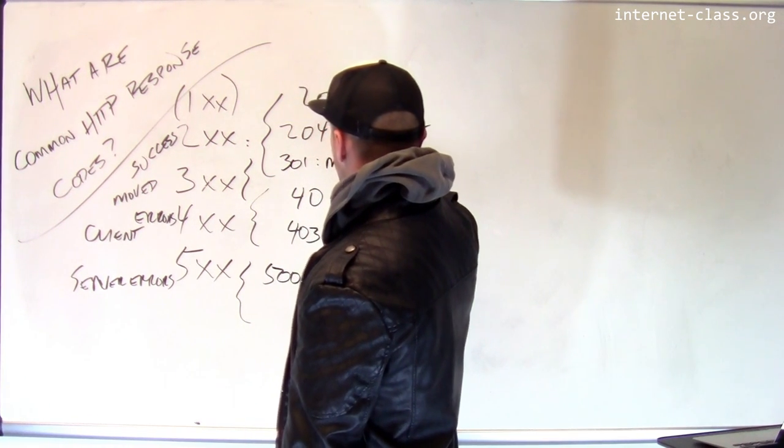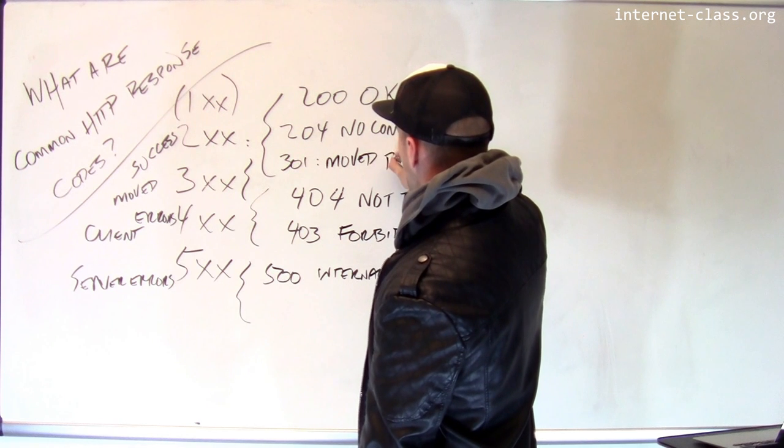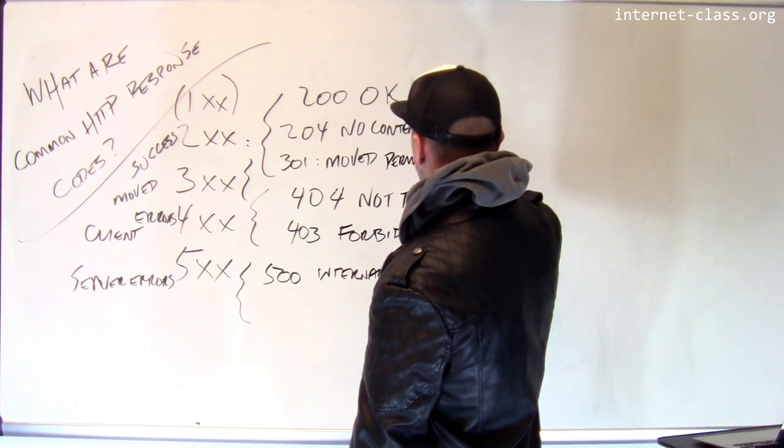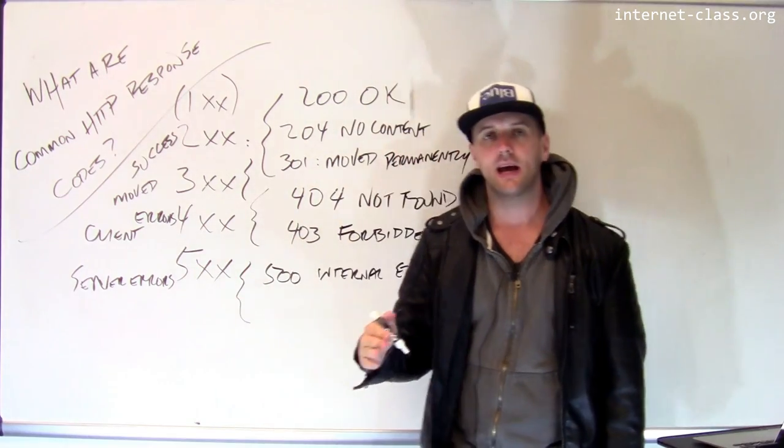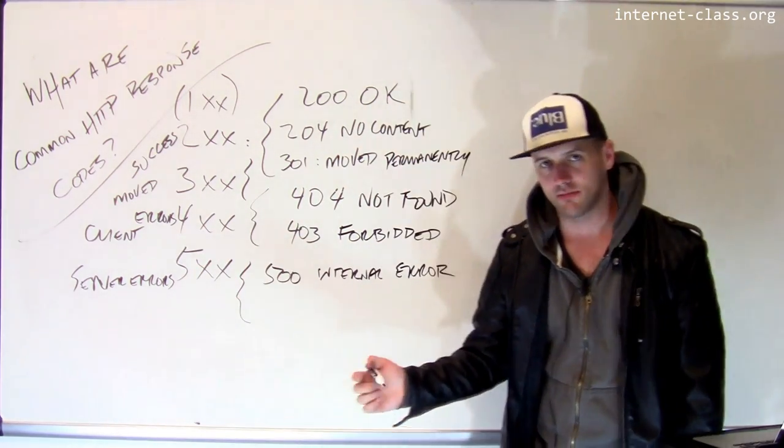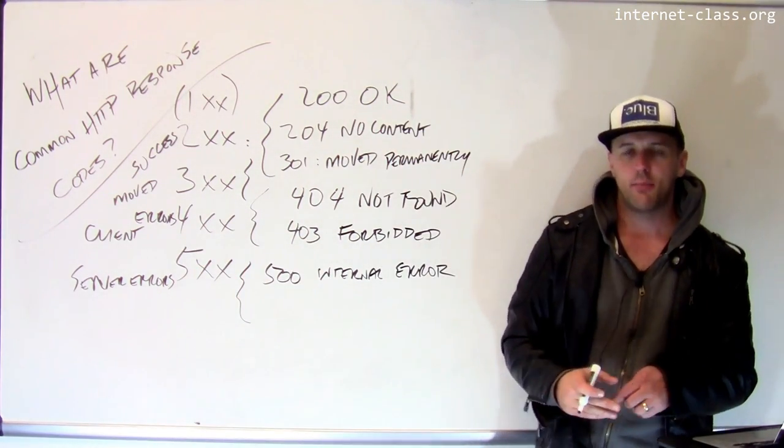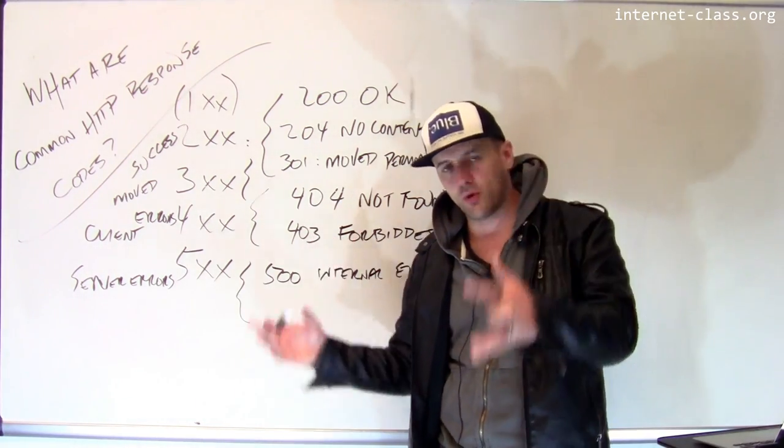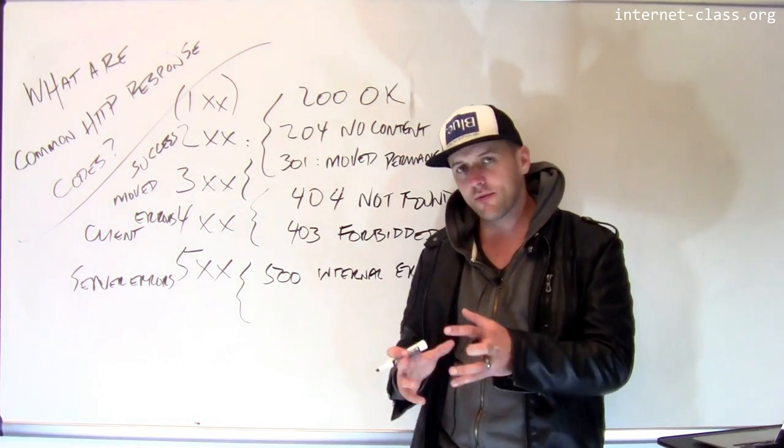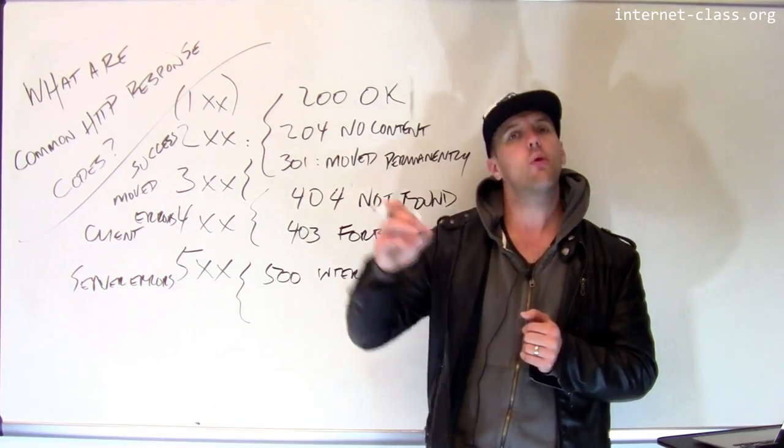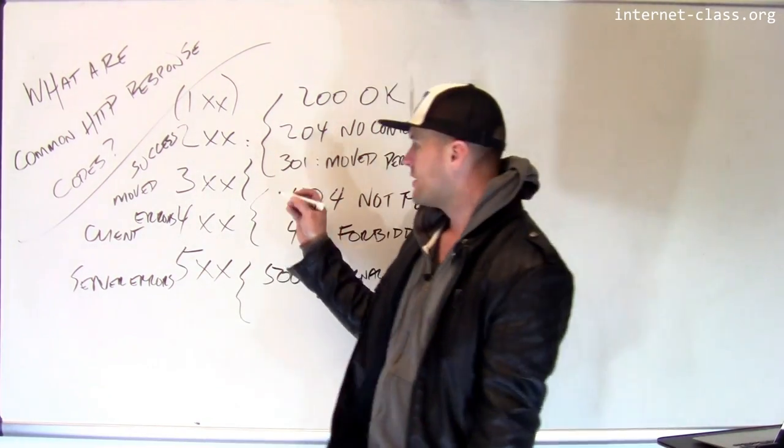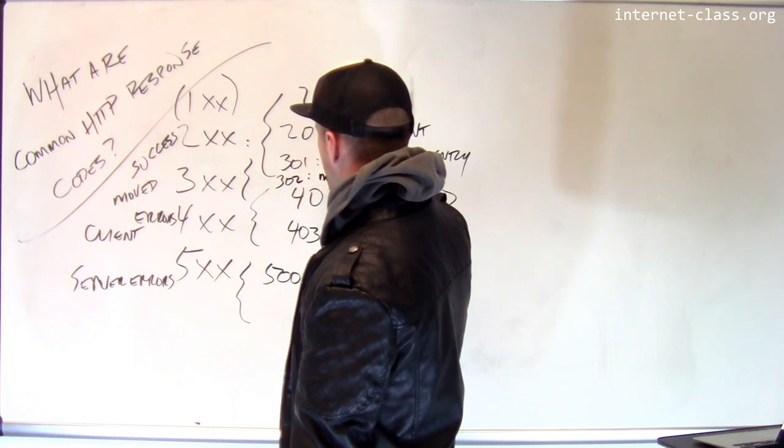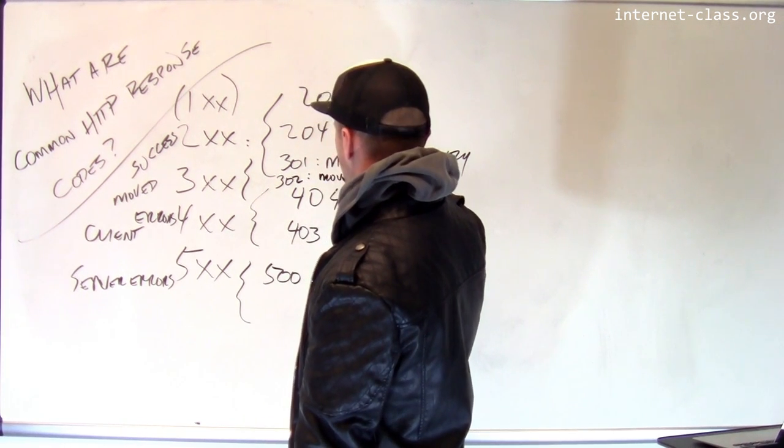So a 301 means that a page was moved permanently. And a 301 code is expected to be accompanied by the address of the new location. So you might go to a page, the page might not exist anymore. For example, somebody's moving their personal website from one place to another, but the server is still going to tell you, oh, by the way, I know where you can find that site. Here's a new link. There's also something called a 302, which is similar. That means that the page was moved temporarily.